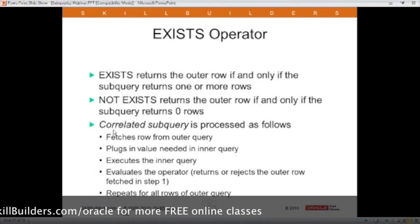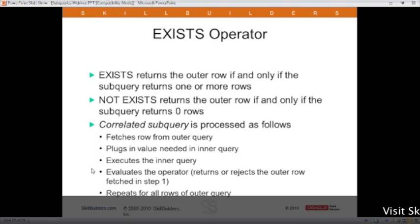A correlated subquery, as we said before, fetches the first row from the outer query, plugs the value in the inner query, executes the inner query, and the inner query just evaluates the operator and says, does it exist? Does it not exist? Do I get any rows or not get any rows? It doesn't have to do anything with the rows from the inner query. It just has to determine if any exists and then passes that back out to the outer query.